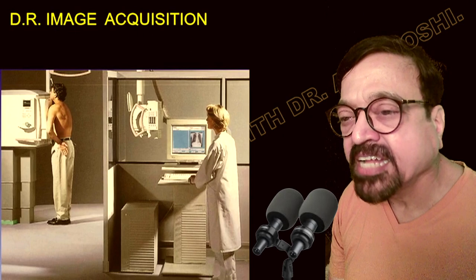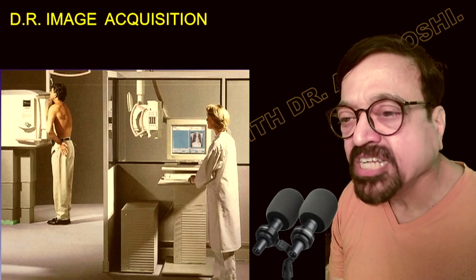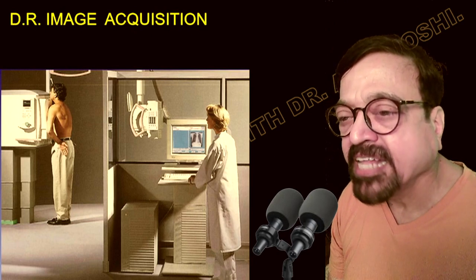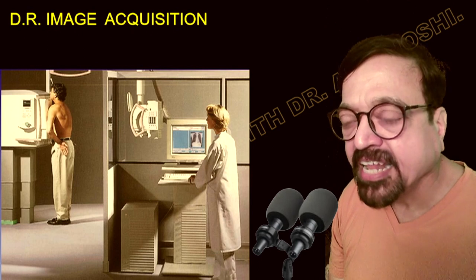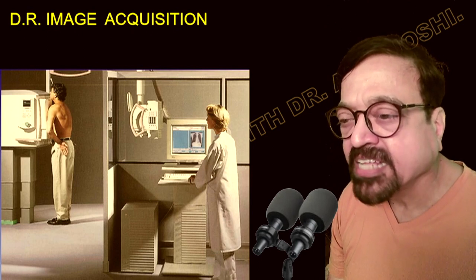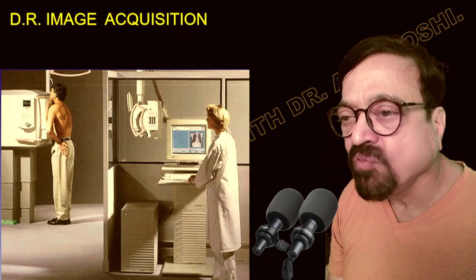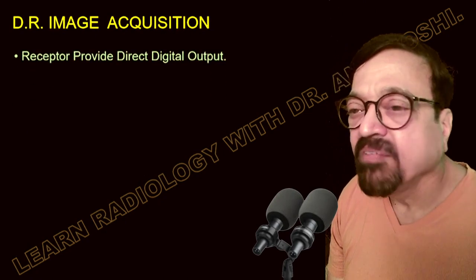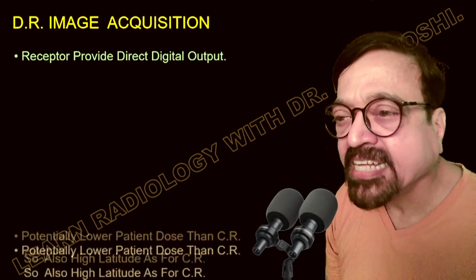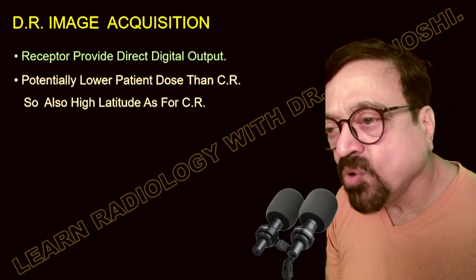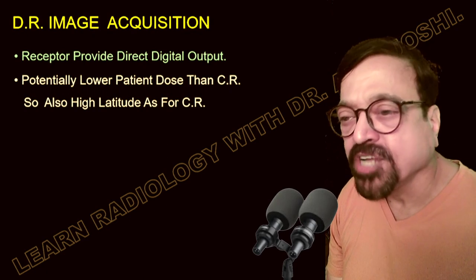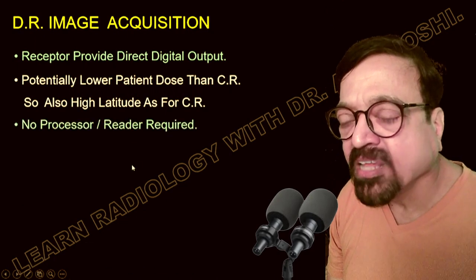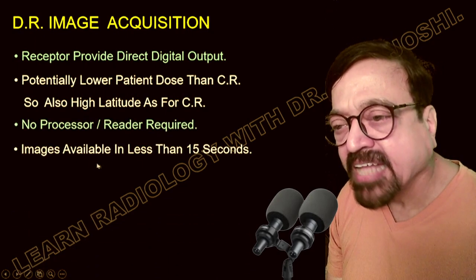In DR technology, the patient stands in front of the DR machine and the radiography operator works from the other end. It is instant — as soon as the exposure is taken, the image appears on screen. You can print it and give it immediately. DR receptors provide direct digital output with potentially lower patient dose than CR, thanks to computerized image enhancement and higher latitude.